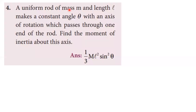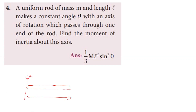A uniform rod of mass m and length l makes a constant angle theta with an axis of rotation which passes through one end of the rod. Find the moment of inertia about this axis. Generally, for a rod where the axis passes through one end, the moment of inertia is ml²/3. Here, the axis makes some angle with the rod.